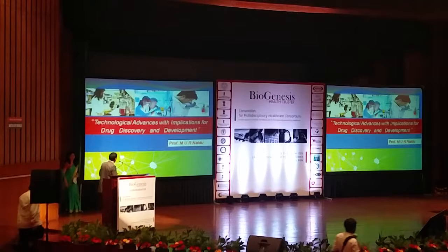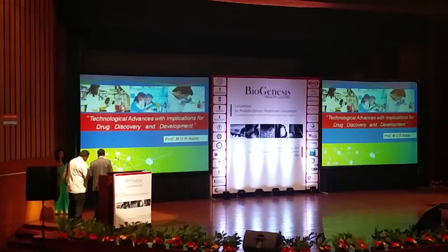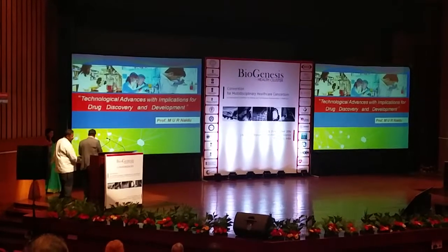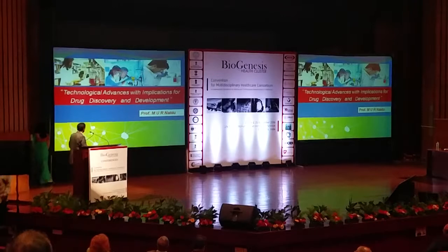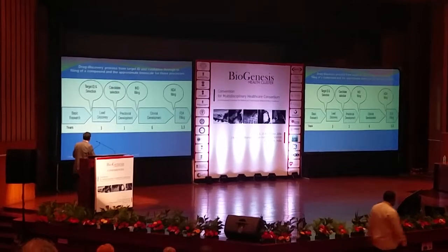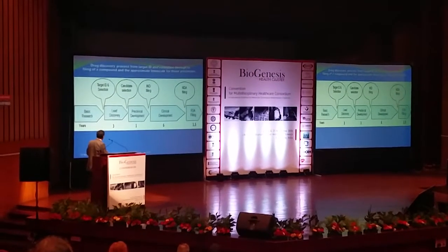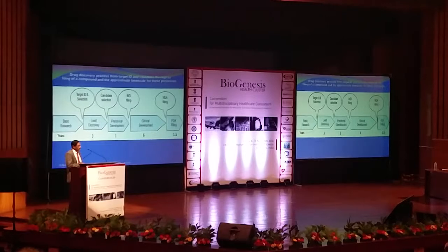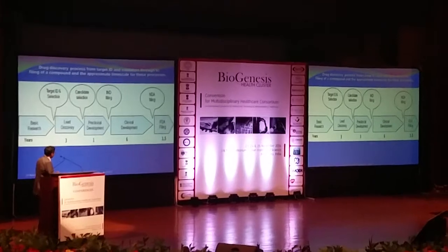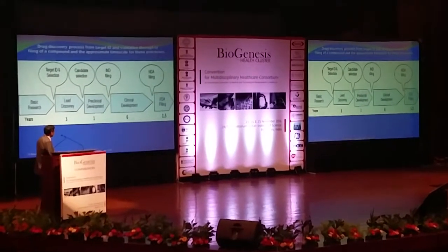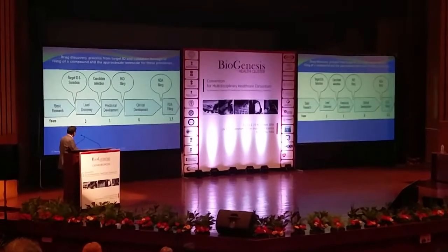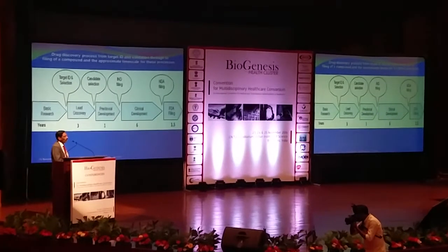Drug discovery can be divided into two major parts. One is the pre-clinicals: target identification, basic research, and drug molecule identification. Then you do pre-clinical development in animal models, submit your data to regulatory as the IND — the investigation of new drug filing — get permission, do clinical development, and then submit a new drug application for marketing. Usually the entire process takes more than 10 to 15 years. It's a very long process.